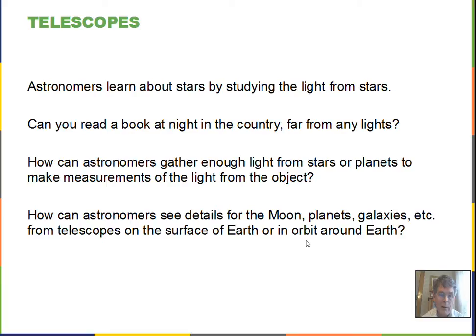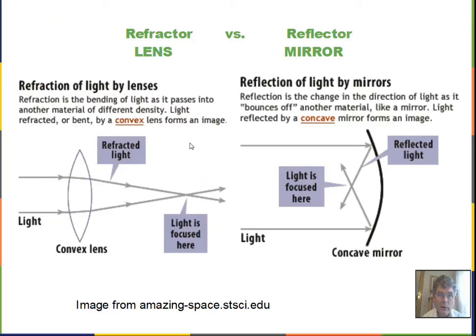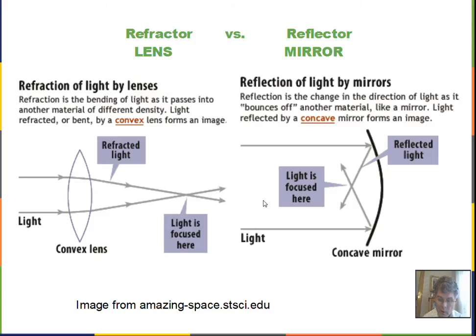We have two types of telescopes. We can have refractor telescopes that use a lens to gather the light from the object, or we can have reflector telescopes that use a mirror to gather the light from the object. The mirror here is concave. For professional telescopes, this will be a parabola. For a refractor telescope, we have a convex lens gathering the light. Both this convex lens and this concave mirror would be called the objective, where the light is first gathered from the object. And then there'll be an eyepiece for both of these arrangements.